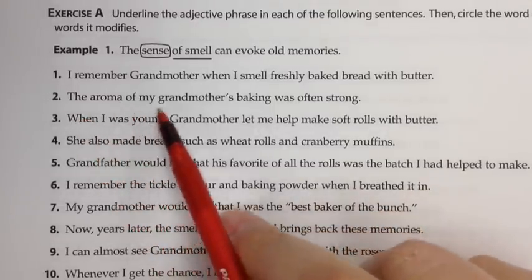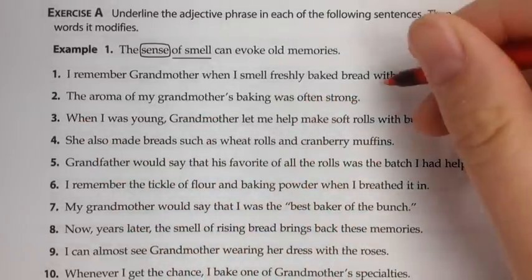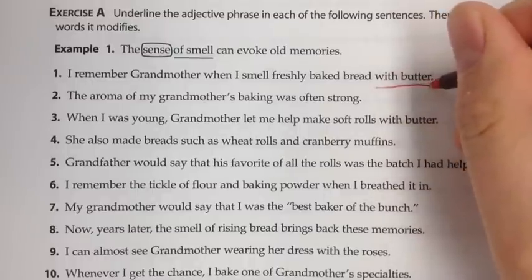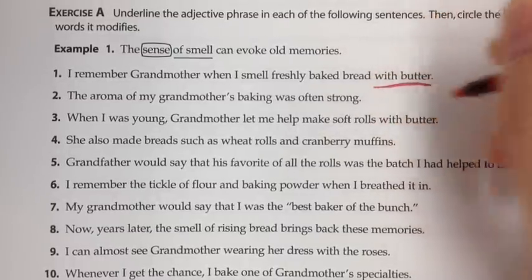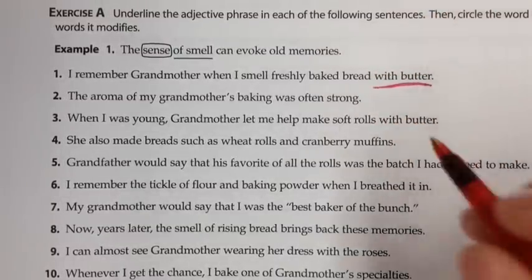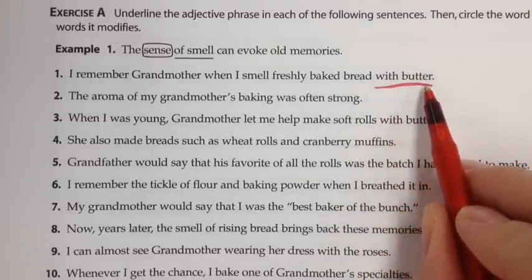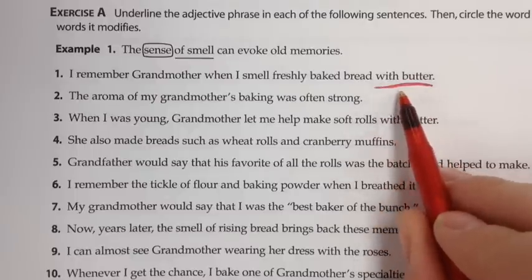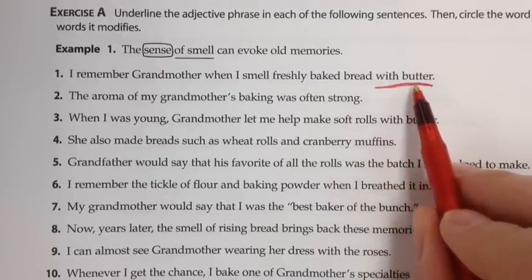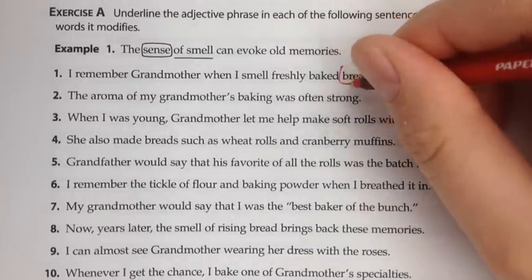I remember grandmother when I smell freshly baked bread with butter. 'With' is a preposition, and 'with butter' is the prepositional phrase. The prepositional phrase has two parts: the preposition and then the noun or pronoun, here called the object of the preposition. Both of these words — in this case it's only two words — operate as one adjective that tells us what kind of bread.